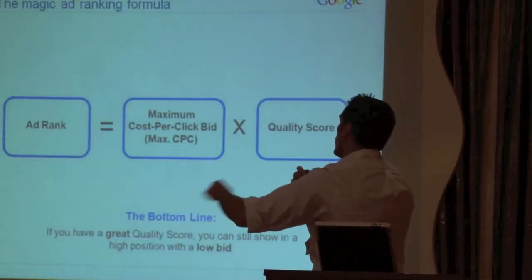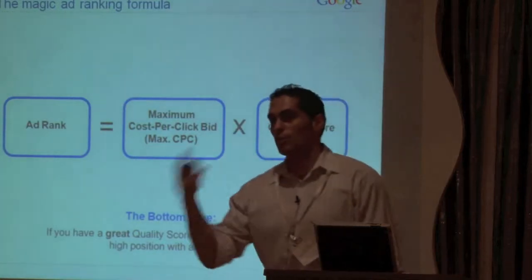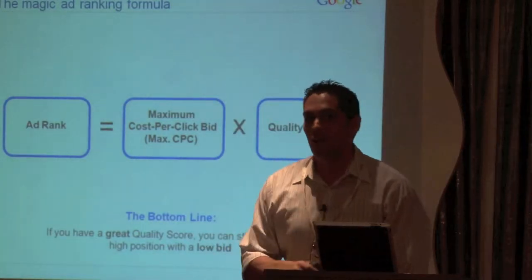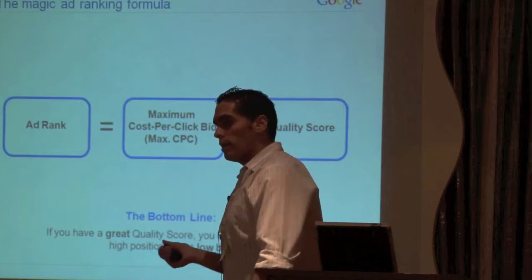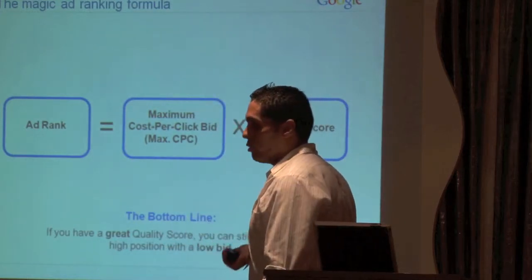So, the magic ad rank formula. This is the secret that Google tells me to tell you, so get ready. The ad rank is determined by your maximum CPC multiplied by your quality score.